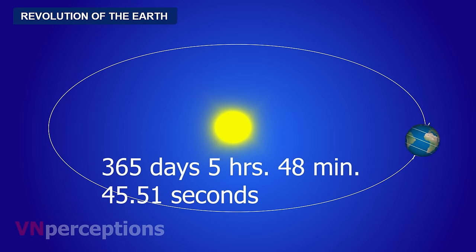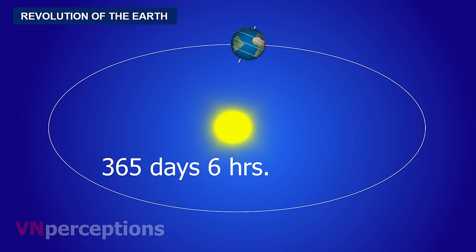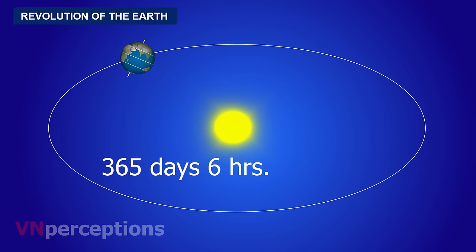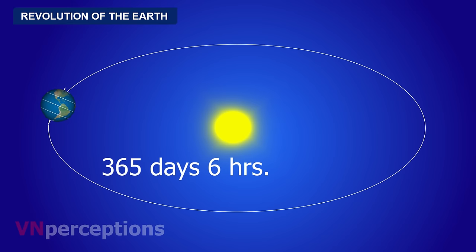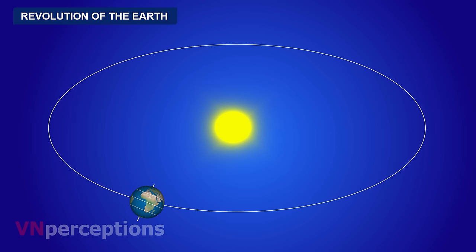We roughly take it as 365 days and 6 hours. To adjust this extra 6 hours, we have the concept of leap year, which comes once every 4 years. On the 4th year, February has 29 days instead of 28 days, and in this way we adjust the 6 hours.